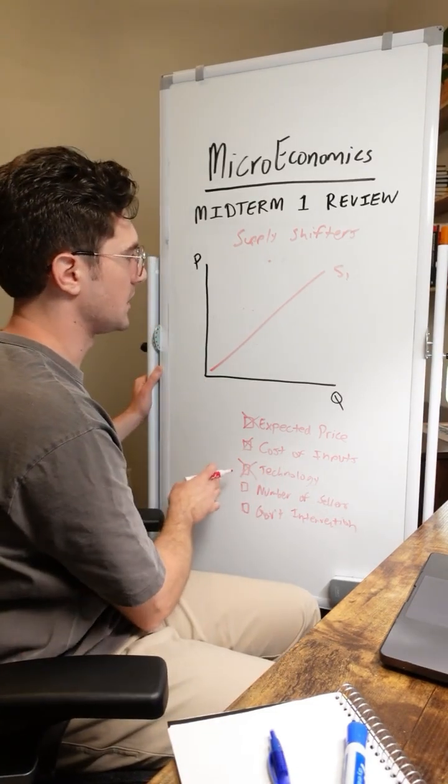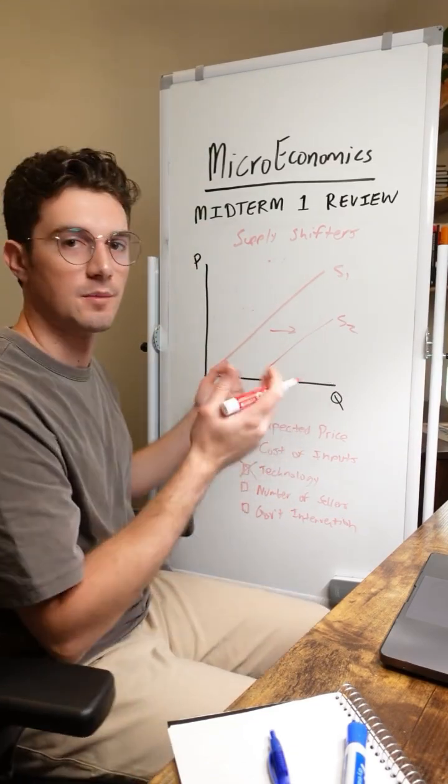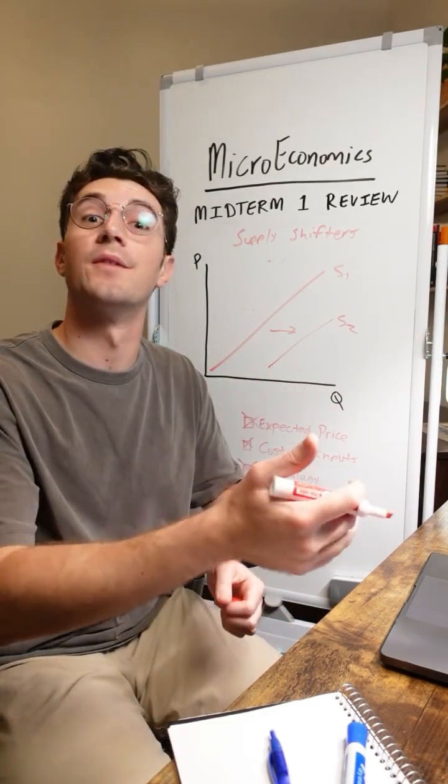All right, next up here, number of sellers. This one's pretty easy. If more sellers enter the market, we're going to shift supply to the right. Simply put, because there's more people selling the good.